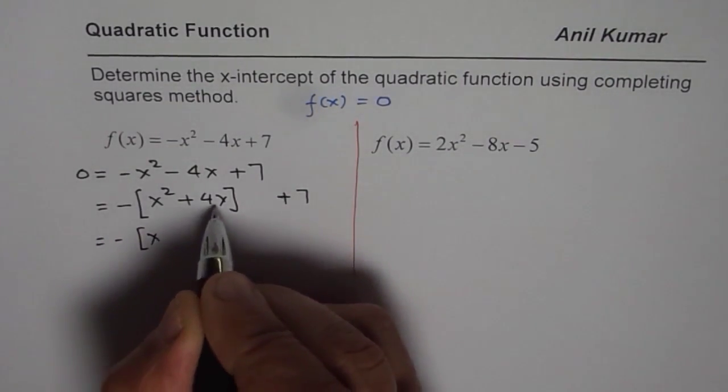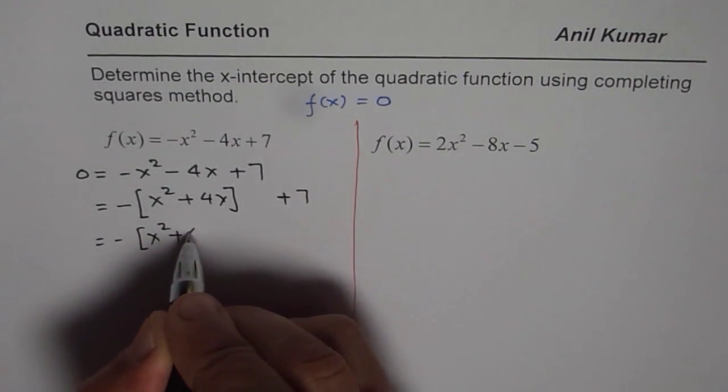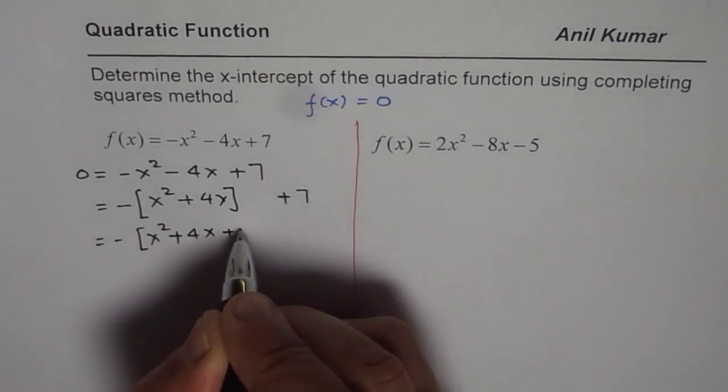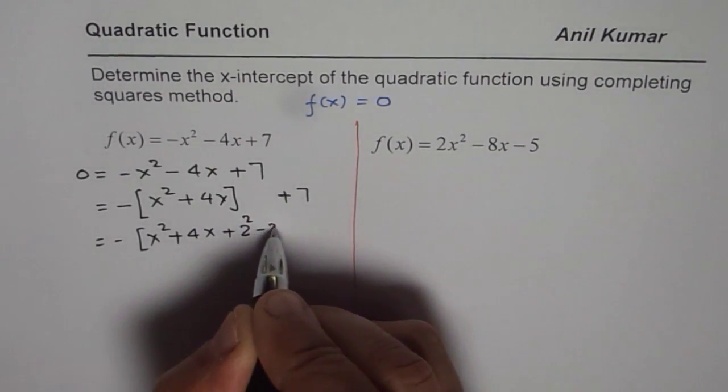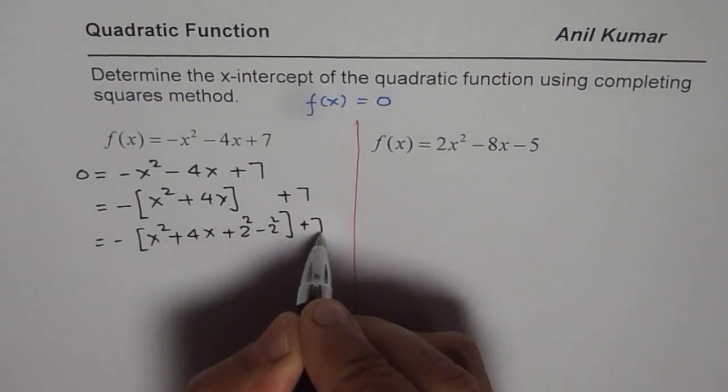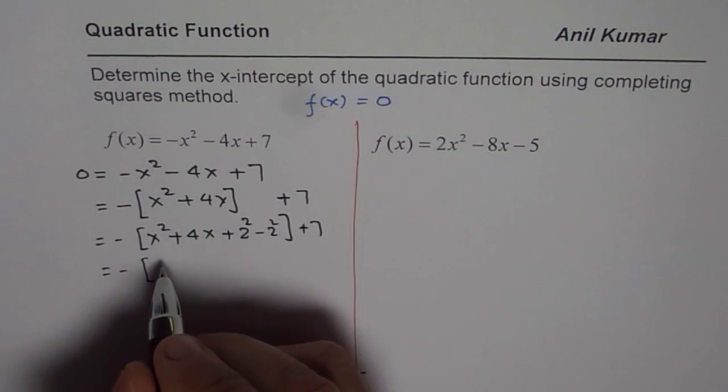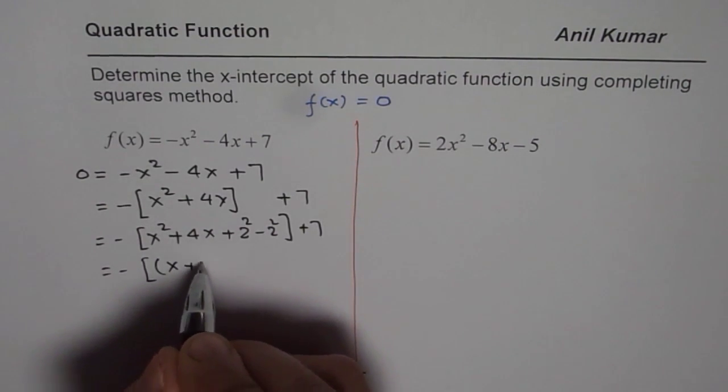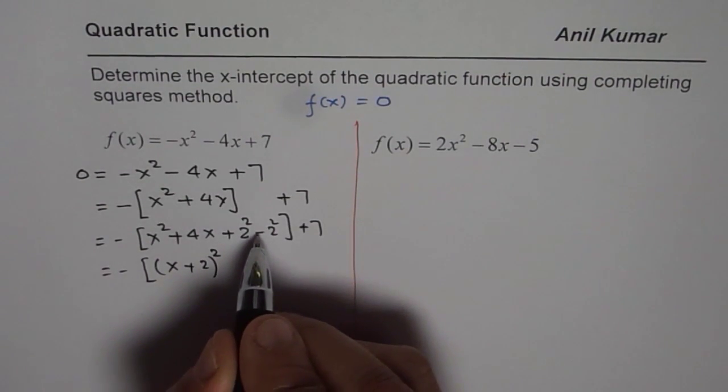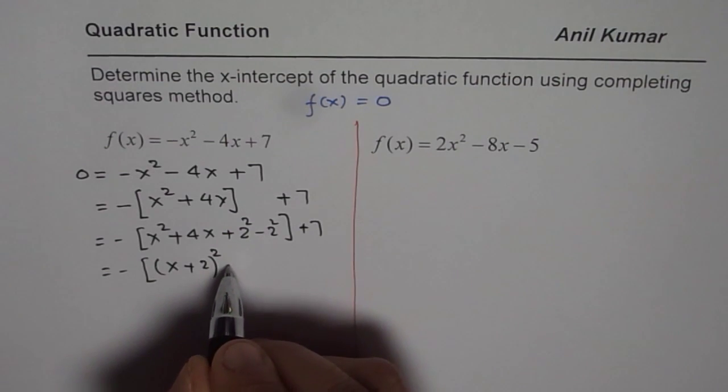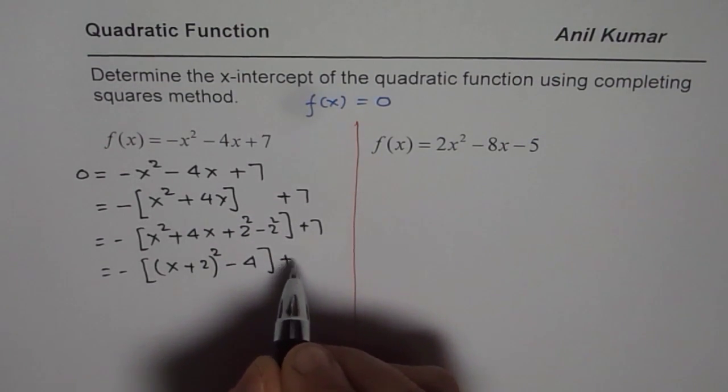And then, next step is, we have to do half of this number. Half of 4 is 2. Add square of that half number. So, which is kind of like this. Now, the first three terms become a perfect square and we can take plus sign and 2 whole square. We are left with -2², which is -4 + 7.